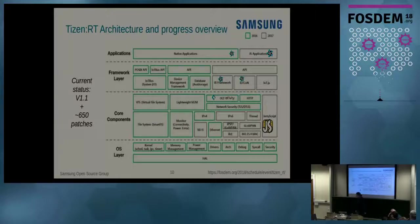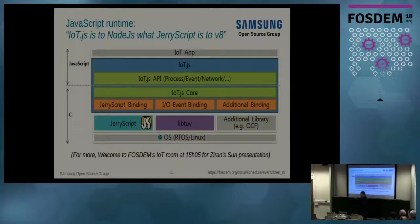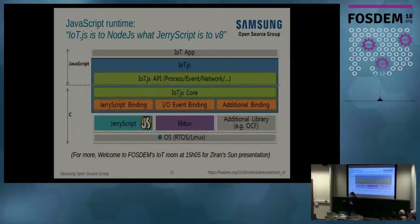Let's have a look at Tizen RT's architecture. There are components mentioned in previous discussions. One feature I want to highlight is that you can build applications on top of the system using JavaScript — which is quite challenging. IoT.js is a JavaScript runtime running on a JavaScript interpreter for constrained devices, and it runs on Tizen RT. If you know Node.js and V8, this is something very similar but very constrained.